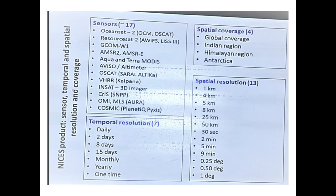These NICES products are launched by NRSC and ISRO. Various sensors are used, including OceanSat, ResourceSat-2, GCOM, AMSR, Aqua with MODIS sensor, and others. Different sensors are mounted on different satellites and provide data with varying properties — different bandwidths and other parameters — suited to their specific uses.